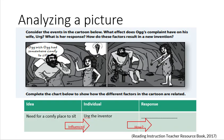Let's begin by analyzing a picture. It says: consider the events in the cartoon below. What effect does Oakes' complaint have on his wife, Erg? What is her response? How do these factors result in a new invention?